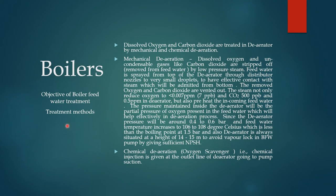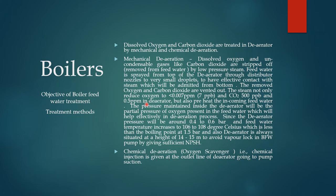The objective of boiler feed water treatment and the treatment methods: dissolved oxygen and carbon dioxide are treated in a deaerator by mechanical and chemical deaeration. Mechanical deaeration removes dissolved oxygen and non-condensable gases like carbon dioxide, which are stripped from feed water by low-pressure steam. Feed water is sprayed from the top of the deaerator through distributor nozzles into very small droplets for effective contact with steam admitted from the bottom. The removed oxygen and carbon dioxide are vented out. Steam reduces oxygen to less than 0.007 ppm and carbon dioxide to 0.5 ppm (500 ppb) in the deaerator.